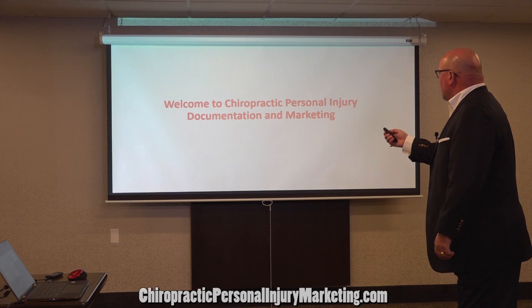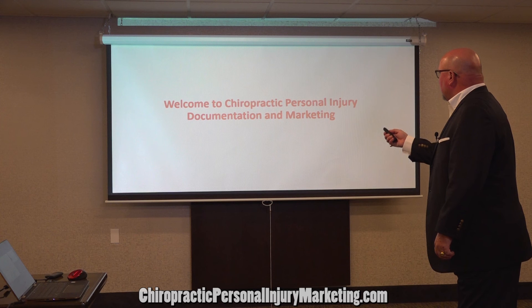Then we go into the legal forms — I'm not going to go into detail today since we covered them in the last webinar. That's the assignment of benefits from the patient, the letter of protection from the attorney lien, and the limited power of attorney you get from the patient. That gives you access to anything the patient has access to — you can look at the insurance policy itself, the declaration page, see if it's been paid, when it's been paid, and how much has been paid, so you know what the attorney has and does not have.